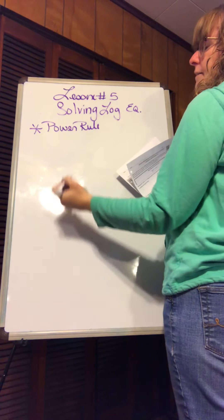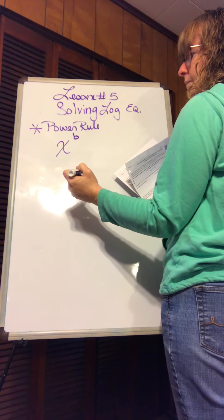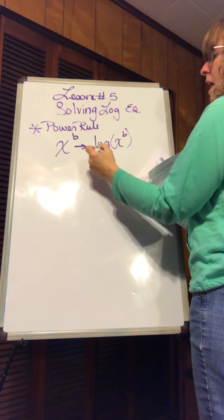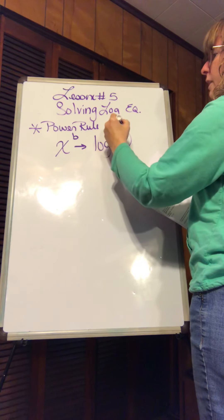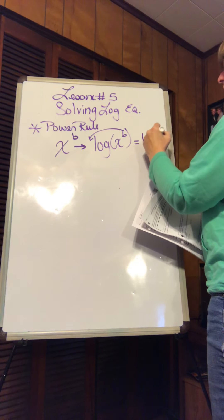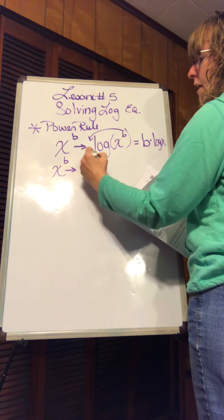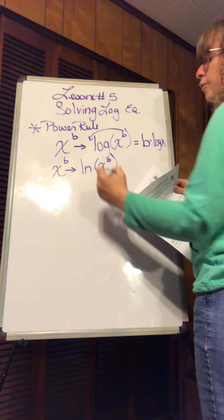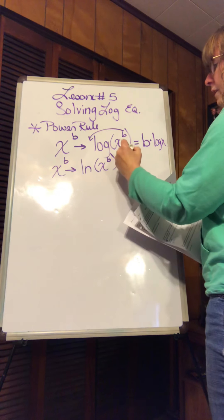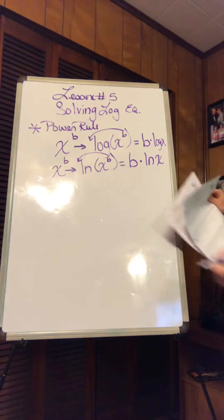The power rule says if you have any kind of number or variable with an exponent and then you put a log on that expression, log means exponent and an exponent - two exponents mean multiplication. That's the power rule. So this would become b times the log of x. This works with the common log and this works with the natural log.